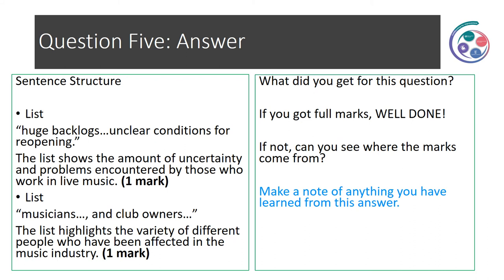Answer to question five. We have a list: 'so huge backlogs through to unclear conditions for reopening.' The list shows the amount of uncertainty and problems encountered by those who work in live music — that gets the first mark. Then we've got a second list: 'musicians... club owners.' The list highlights the variety of different people who have been affected in the music industry. Make a note of anything you've learned from this answer before we move on.